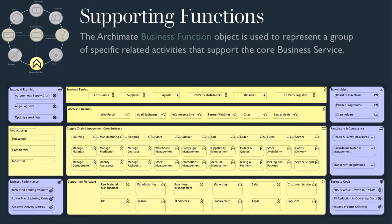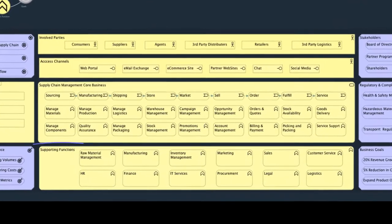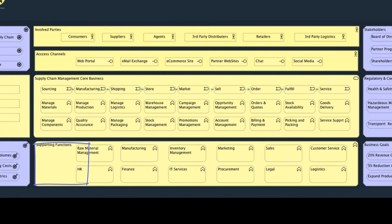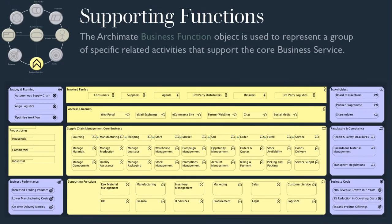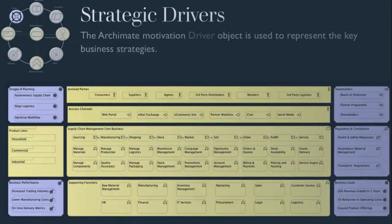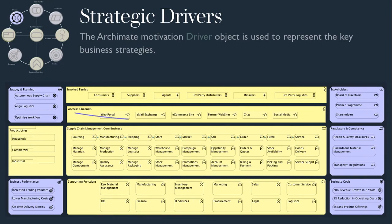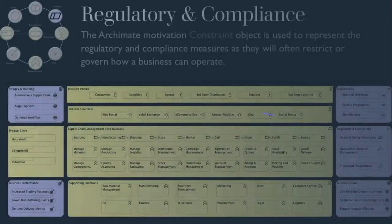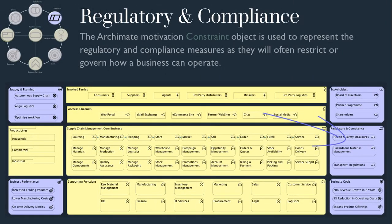The business function object is used to reflect the related group of business activities that support the core business service. We could represent these as business actors, although not every organization will have a one-to-one business unit within the supporting functions. The ArchiMate Motivation Driver object is used to represent the key business strategies. The ArchiMate Motivation Constraint object is used to represent the regulatory and compliance measures, as they will often restrict or govern how a business can or should operate. This could also include tax jurisdictions, industry standards, compliance, or quality of services.